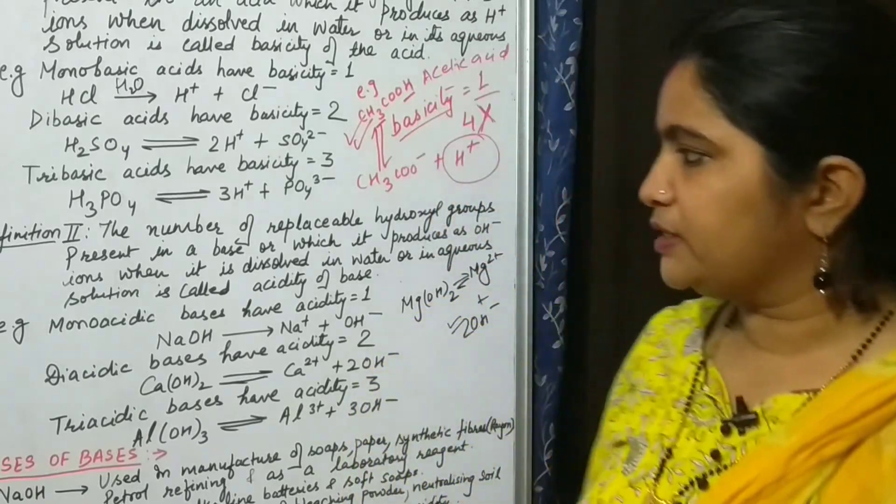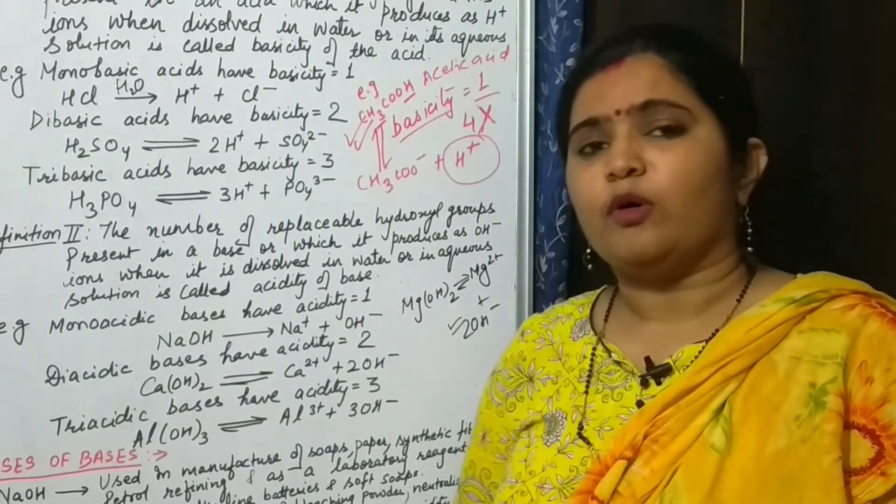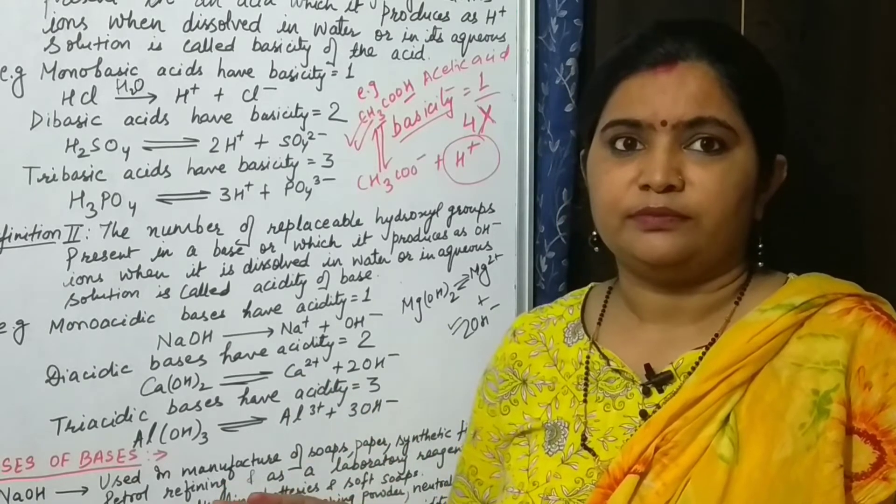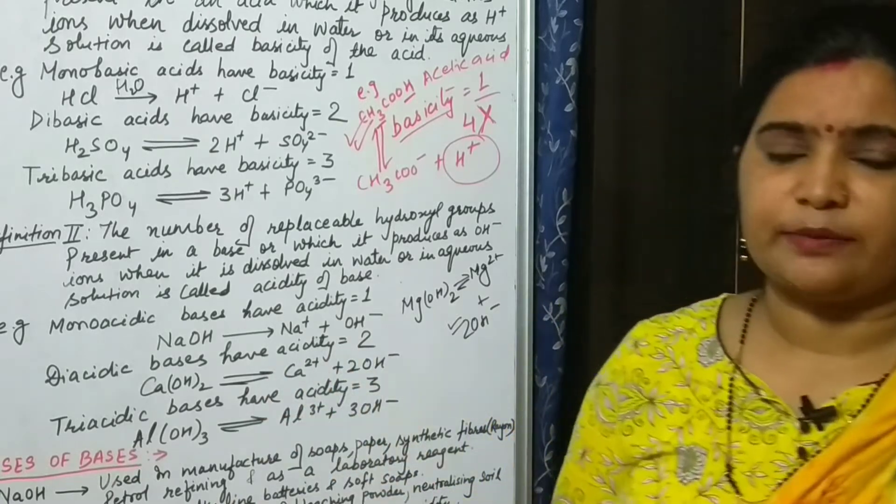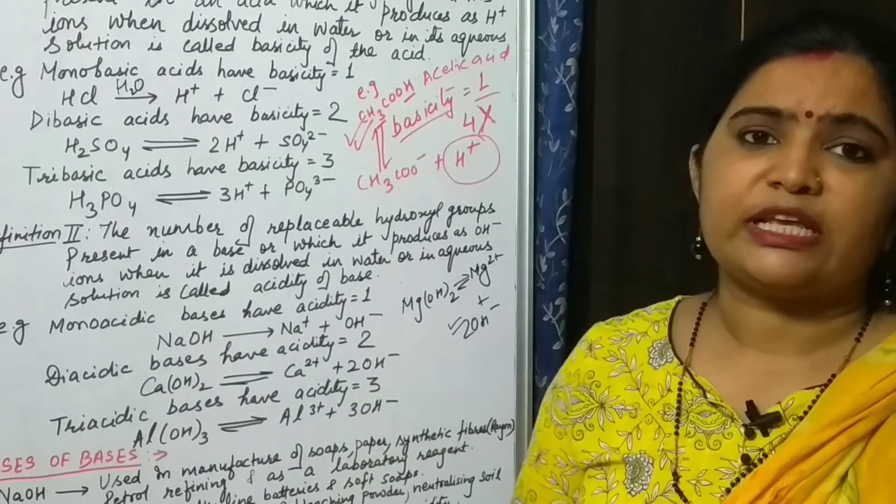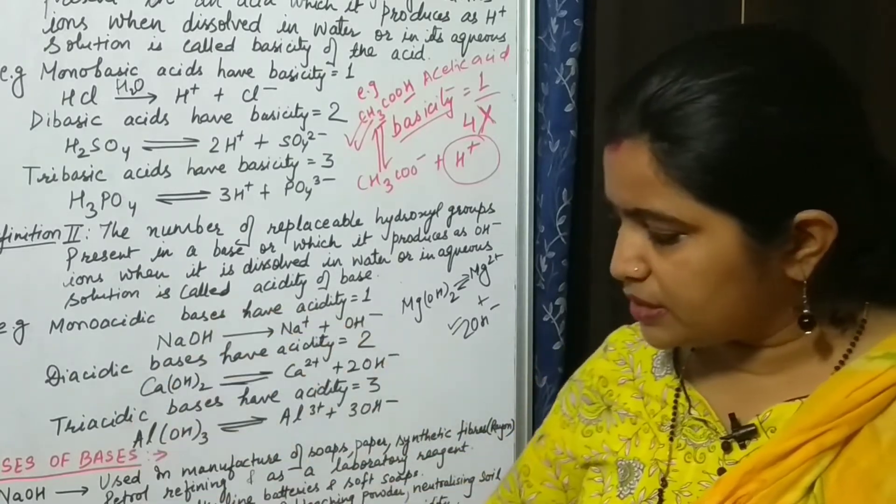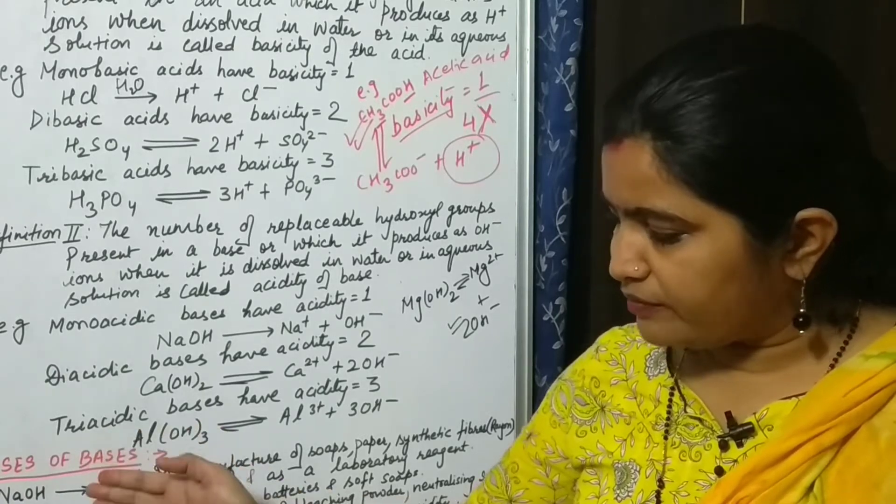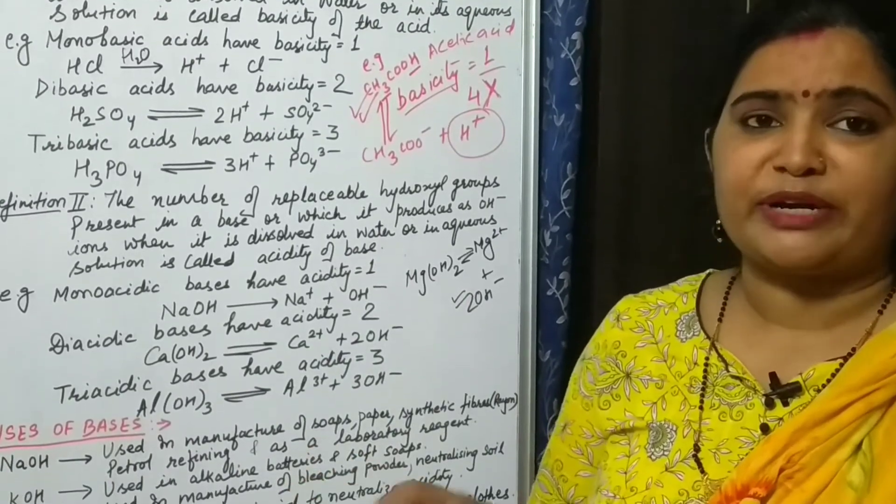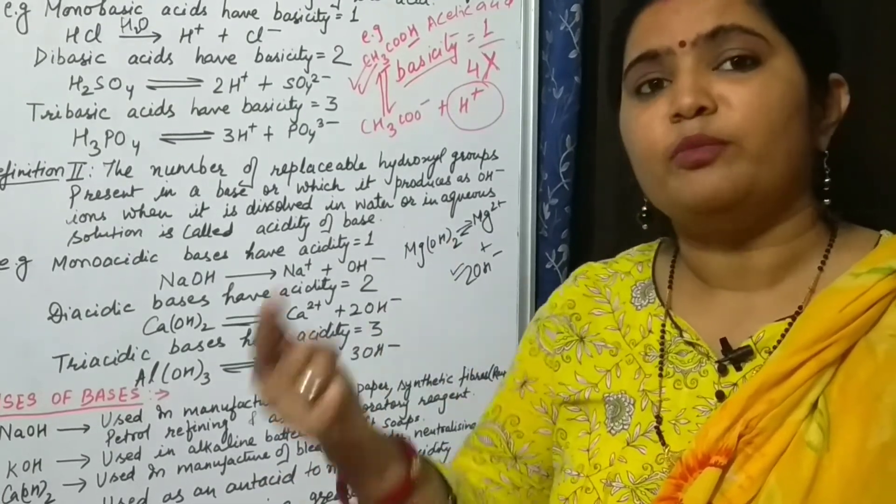Now some children ask me, 'Ma'am, what is the difference between alkalis and bases?' See children, all the alkalis can be bases but all bases cannot be alkalis. How can you understand this concept? Alkalis means those bases which have tendency to dissolve in water. So in your syllabus you will study only about those bases which are soluble in water. Till now we have discussed about all the bases which are having hydroxide ions attached to them. But some of the oxides are also bases, such as metallic oxides. They are bases but they are not alkalis. But if you will dissolve them in water they will form alkalis.